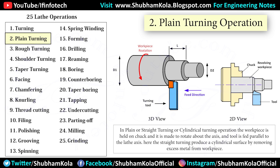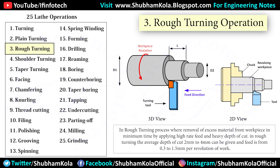In plane or straight turning operation, the workpiece is held on a chuck and made to rotate about the axis, and the tool is fed parallel to the lathe axis. Straight turning produces a cylindrical surface by removing excess metal from the workpiece. In the rough turning process, removal of excess material from the workpiece is done in minimum time by applying a high feed rate and heavy depth of cut.